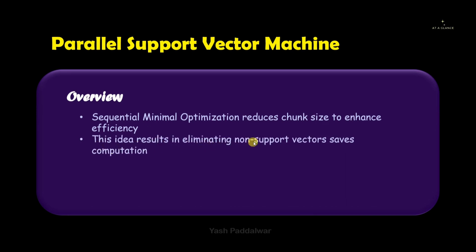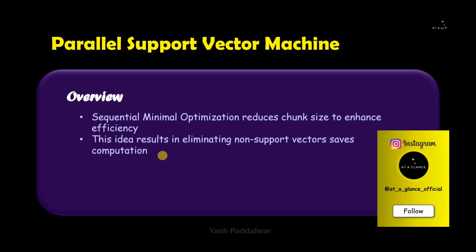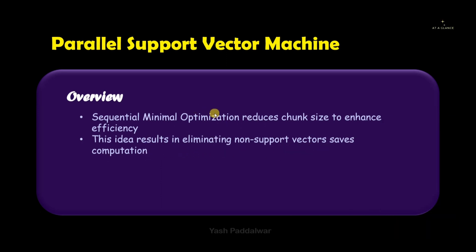When we reduce the entire big data into small chunks, the concept of support vectors becomes important. Points that are not support vectors — those not contributing to finding the optimal hyperplane — are called non-support vectors. There is no need for a large number of non-support vectors; they not only increase data size but also increase computation, slowing down the process of finding the optimal hyperplane. Eliminating them increases efficiency.